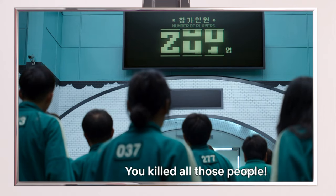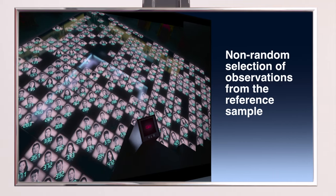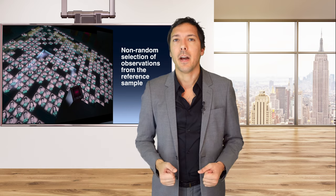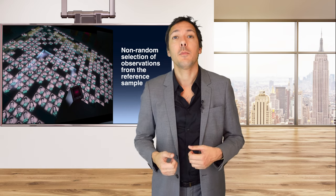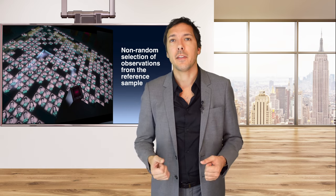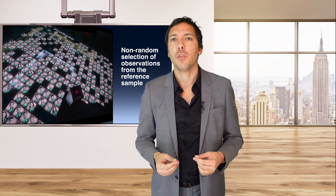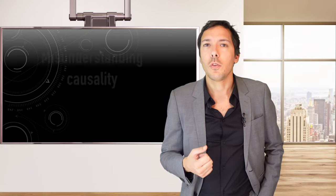In more scientific terms, we would say that the observations made at the end of the investigation are a non-random selection of observations from the reference sample. But the survivorship bias can take much more subtle forms and is present in pretty much all scientific disciplines. As such, it is important to know what methodological caveats it brings.